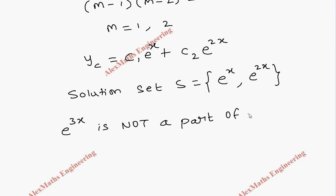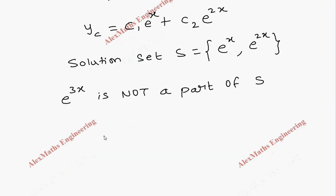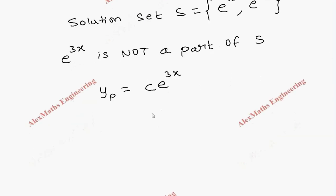Therefore let's assume the particular integral as ce^3x with some unknown coefficient. Now let's find its derivative, which is ce^3x · 3, so 3ce^3x.